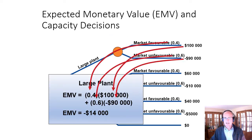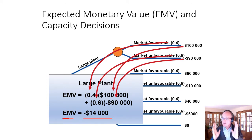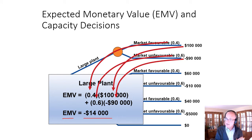The expected monetary value is 0.4 (probability of favorable market) times $100,000 (return with favorable market) plus 0.6 (probability of unfavorable market) times negative $90,000 (the outcome). So if we build a large plant, our expected monetary value is negative $14,000. Under no circumstances will we actually lose exactly $14,000 — we will either lose $90,000 or make $100,000 — but the probability-weighted expected value is negative $14,000, and it gives us insight into that decision-making process.